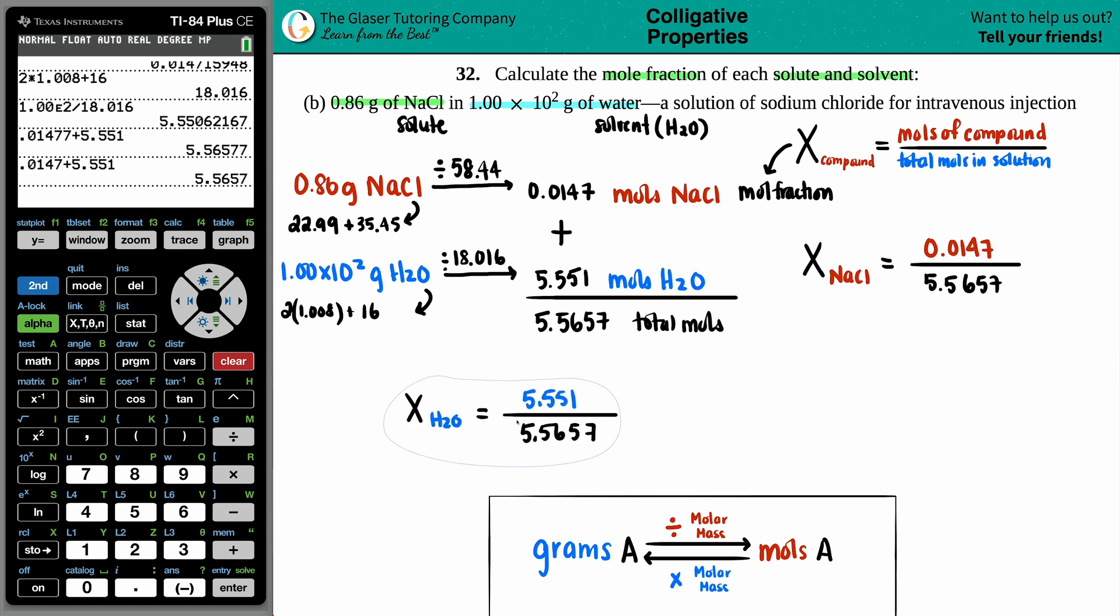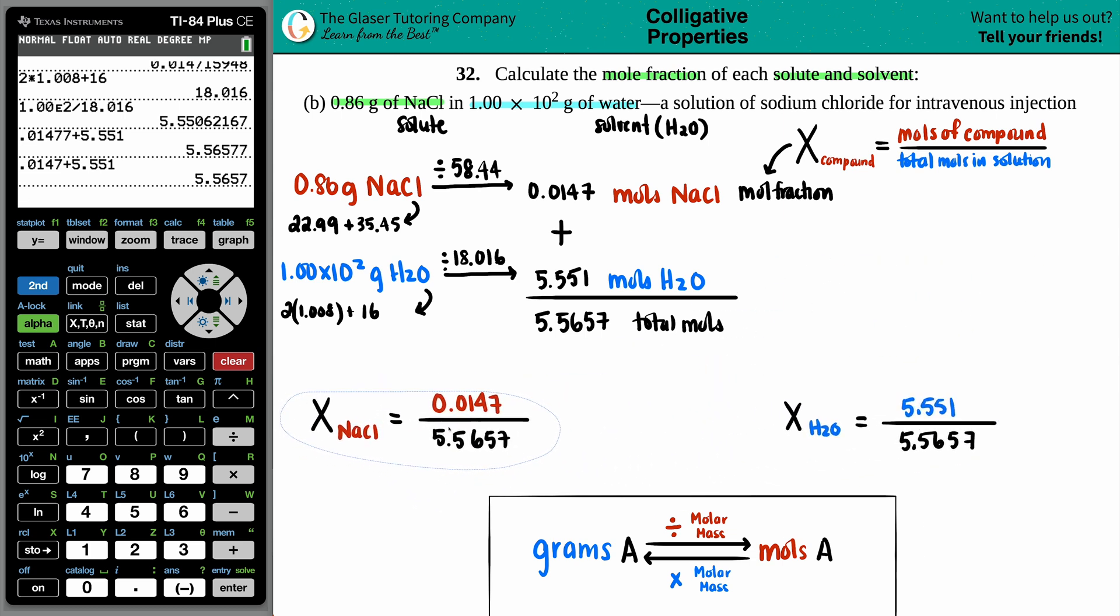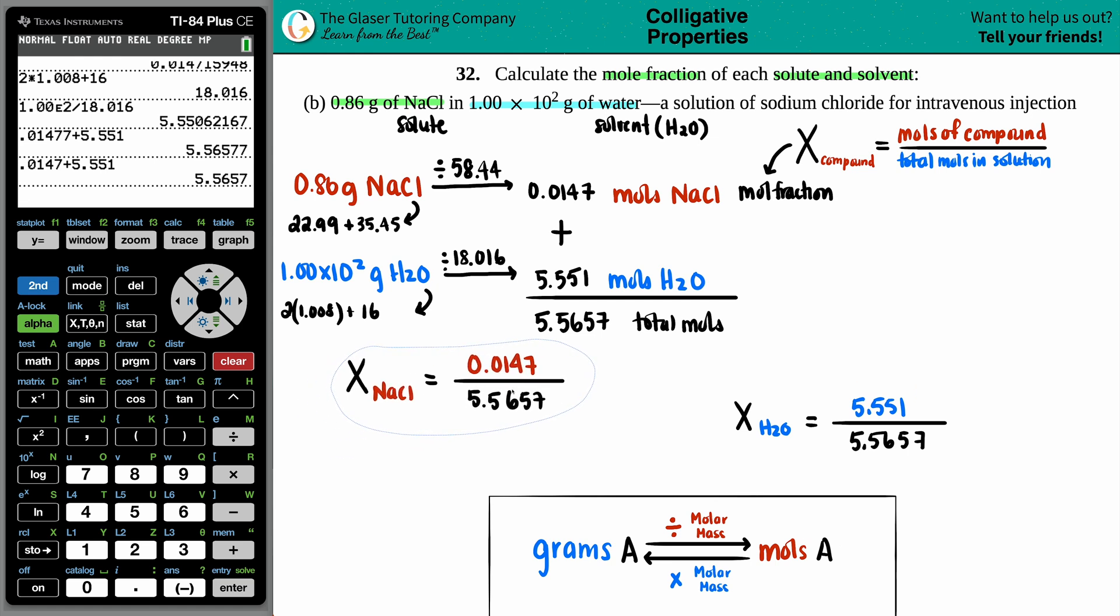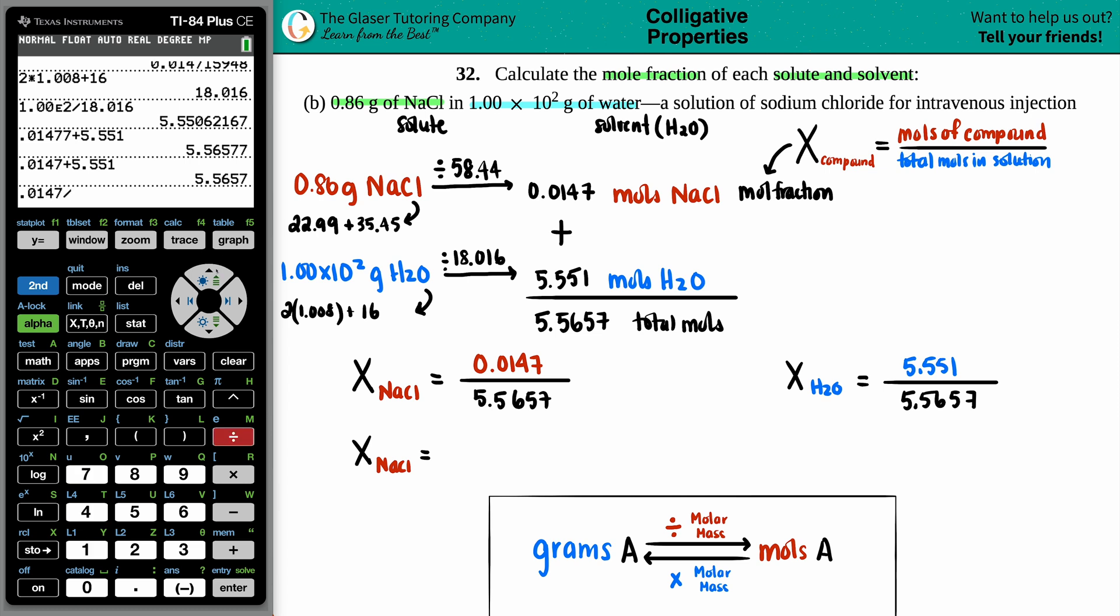Now we are ready to do the math. The mole fraction of the NaCl is 0.0147 divided by that total. So if I put this into scientific notation, we got two sig figs for that one. So maybe 2.6 times 10 to the negative third. Mole fractions do not have any units.